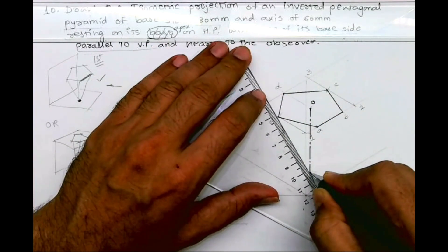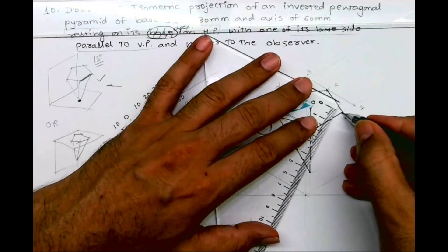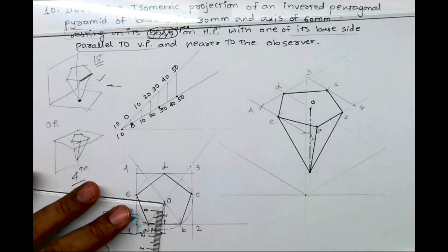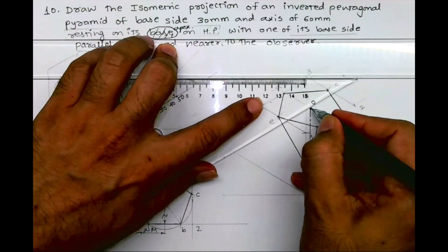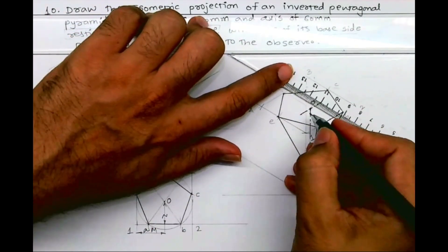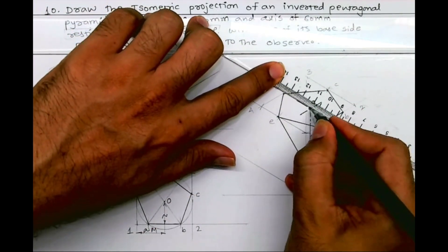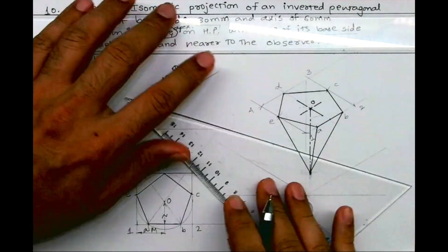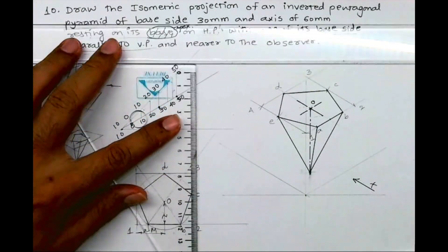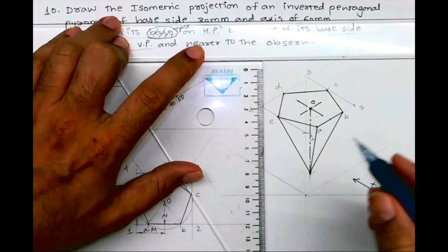Now in this we'll join extreme boundary, so it will be this way. And from point O will draw axis, so it is this way. Observer will see from here. We'll write origin 30, 30 degree. We'll complete the box.